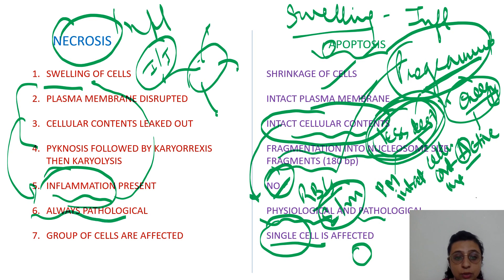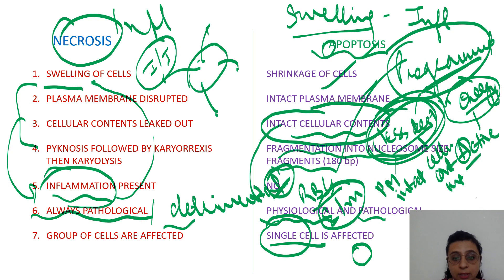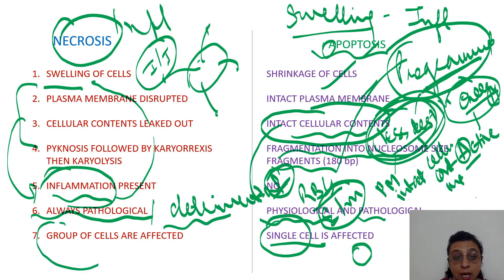Necrosis is always pathological or detrimental to your body. And thus, a large number of cells — a group of cells — are affected.